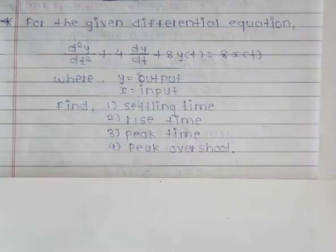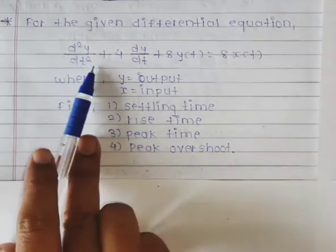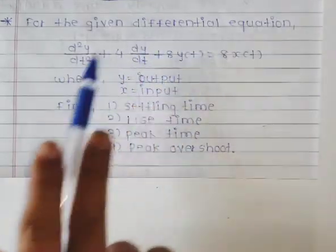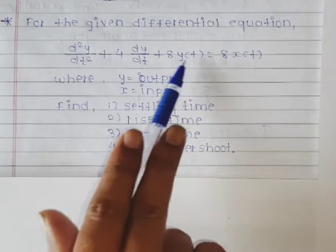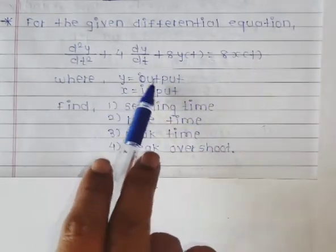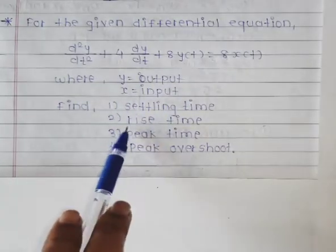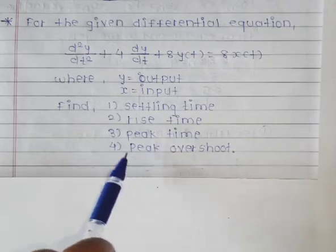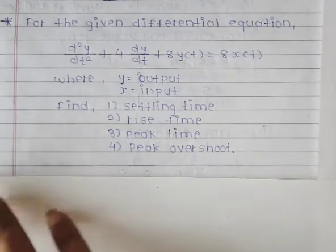This problem is based on time response specification or transient response specification. For a given differential equation d²y/dt² + 4(dy/dt) + 8y(t) = 8x(t), where y is output and x is input, find: (1) settling time, (2) rise time, (3) peak time, and (4) peak overshoot.